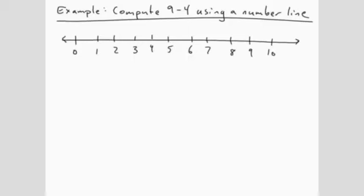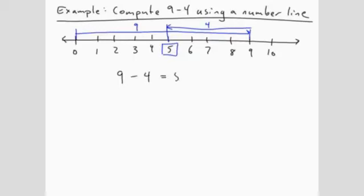The calculation for subtraction begins at 0 just as addition. We start at 0 and move 9 to the right, and then to subtract 4 we move 4 to the left. We stop at 5, and so the answer is 5. 9 minus 4 equals 5.